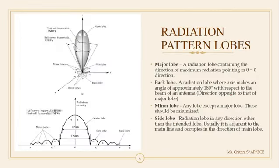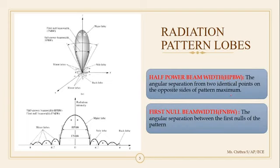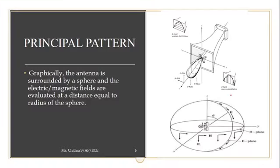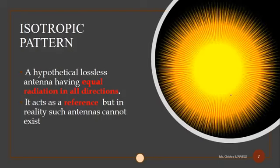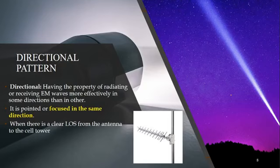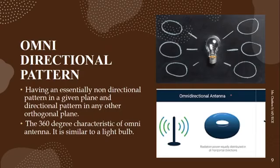To summarize this video: we saw the various lobes — major lobe, back lobe, minor lobe, and side lobes. We covered half power beam width and first null beam width. We saw the principal pattern and three radiation pattern types: isotropic (example: the sun), directional (example: a flashlight or torch which focuses on one main direction), and omnidirectional (example: a light bulb which spreads light only in the horizontal plane with no radiation in the other plane).